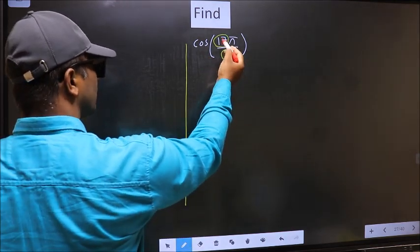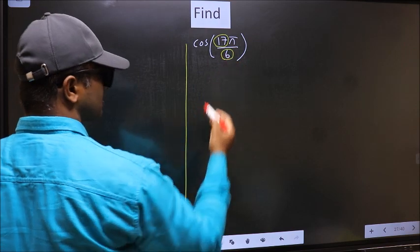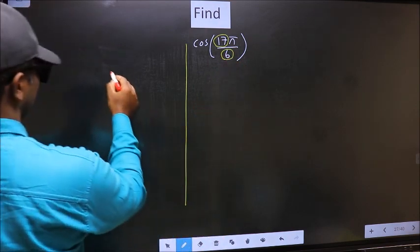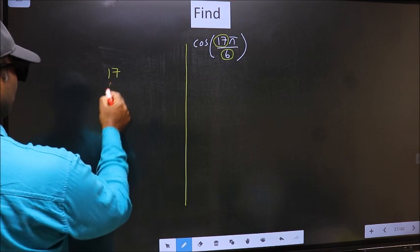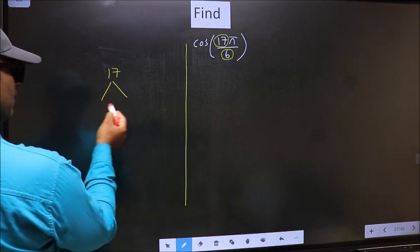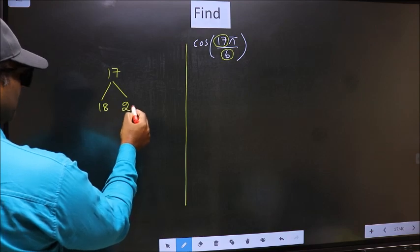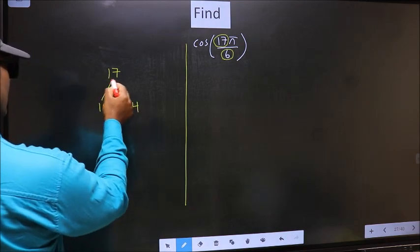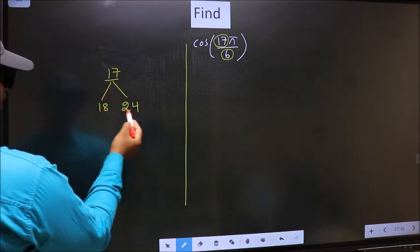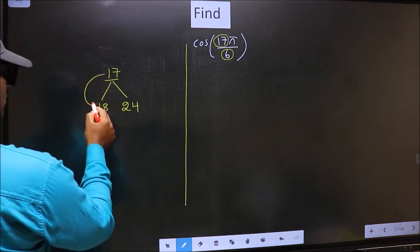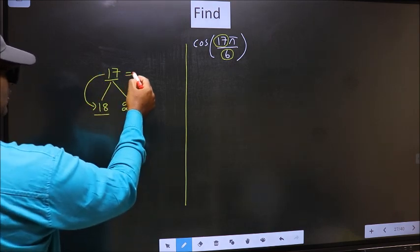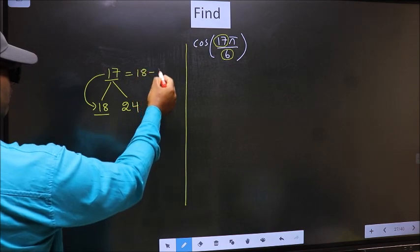17 is close to which multiple of 6? What I mean is, 17 and here you write multiples of 6. That is 18 and 24. Now 17 is close to which multiple? This is close to 18. So 17 should be written as 18 minus 1.